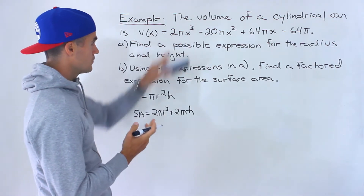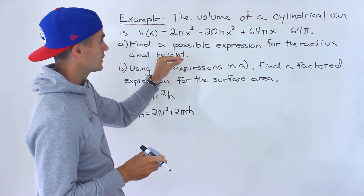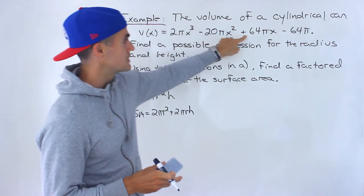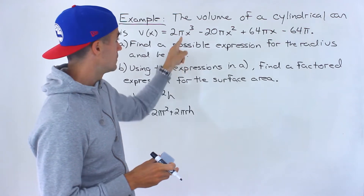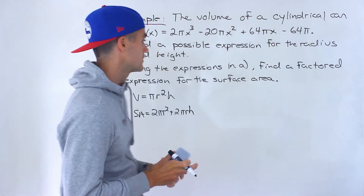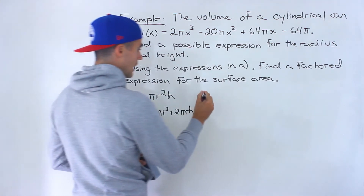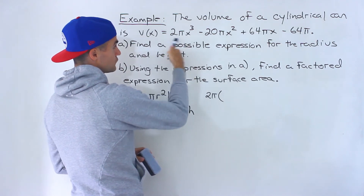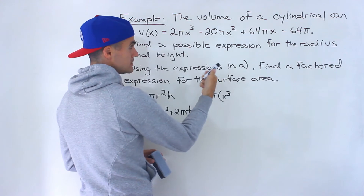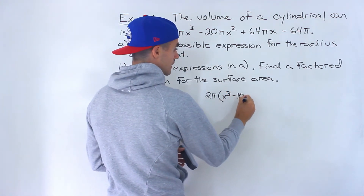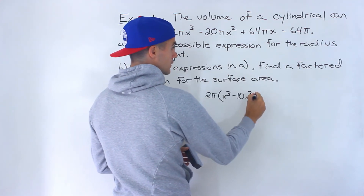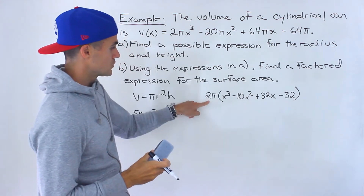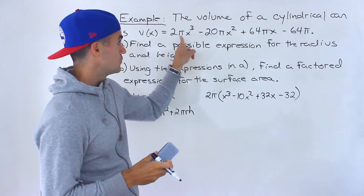To start part a, we need to factor this expression. Notice that we can take out a 2 from the coefficients — 2, 20, 64, 64 — and also take out a π. So first I'm going to take out a 2π from everything. Dividing all terms by 2π leaves us with x³ - 10x² + 32x - 32 inside the bracket.